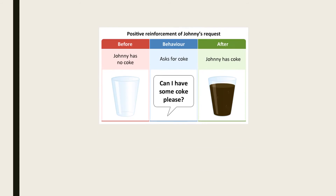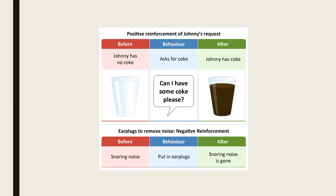Before we move on to punishment, let's look at another example of each type of reinforcement. In this scenario the antecedent is that Johnny has no coke. The behaviour of asking for coke politely is positively reinforced by the addition of a pleasant stimulus — the coke — so Johnny is more likely to use his manners in the future. This next scenario illustrates negative reinforcement, as the behaviour of putting in earplugs is strengthened through the removal of an aversive stimulus — the snoring noise.